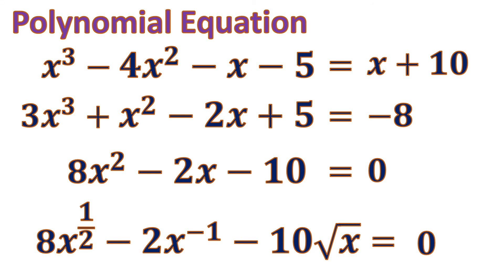So, observe that the exponent is 1 half and another exponent is negative 1. And we have a square root of x where square root means to the power of 1 half. And so, this makes it not a polynomial equation. But this is actually an algebraic equation.